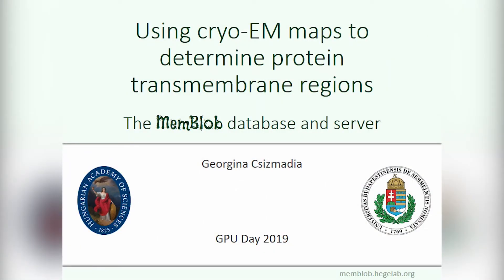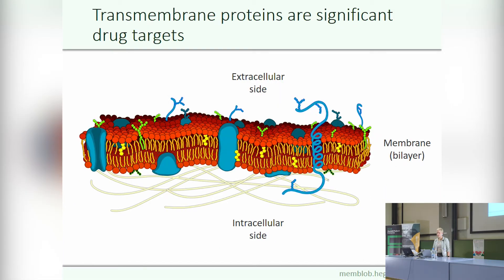Cell membranes contain various proteins. Among them, transmembrane proteins are those that span the cell membrane entirely. They have an extracellular, a transmembrane, and an intracellular region.